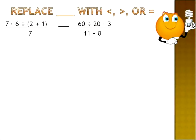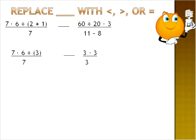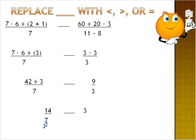Our final question involves fractions. When you have fractions, you solve the top and the bottom completely first, then worry about the fraction at the end. On the left: seven times six divided by two plus one. On the right: sixty divided by twenty times three. Sixty divided by twenty is three, and two plus one is three. Seven times six is forty-two, and three times three is nine. Then forty-two divided by three is fourteen over seven, and nine divided by three is three. Fourteen divided by seven is two.